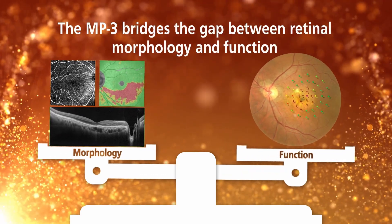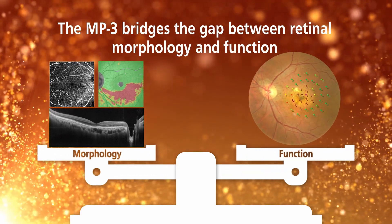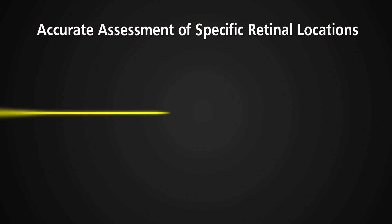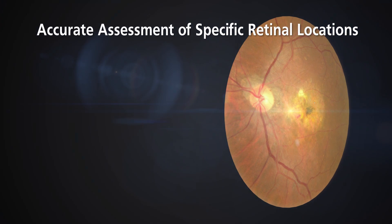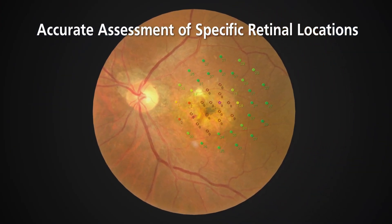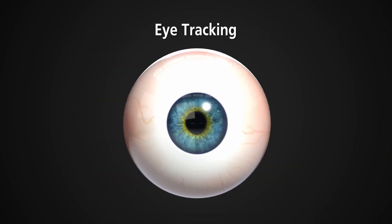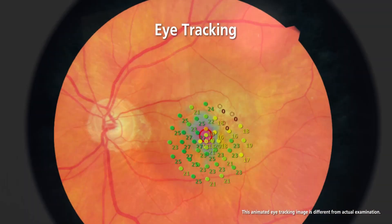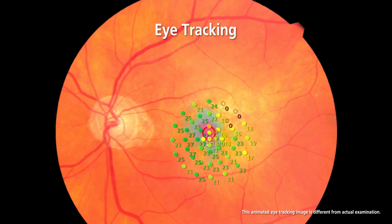The MP3 bridges the gap between retinal morphology and function. This microperimeter provides an accurate assessment of retinal function by testing retinal sensitivity at specific retinal locations that can be selected based on the area of treatment. A very fast 30Hz 3D eye tracker ensures precise placement of stimuli to the region of interest.